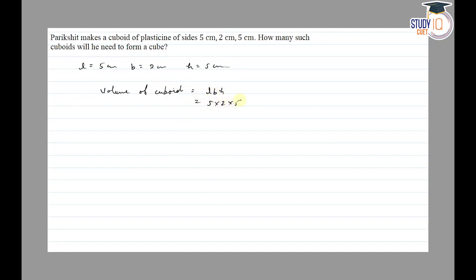times 2 times 5, which equals 5 times 2, 5 times 2, equals 50 centimeter cube. Then how many such cuboids will he need to form a cube?